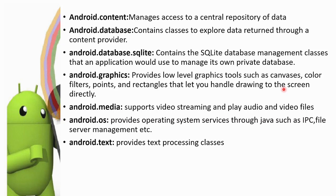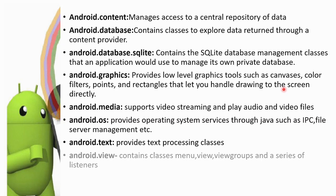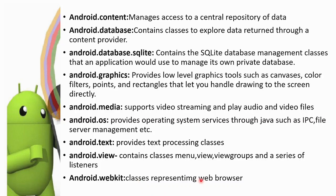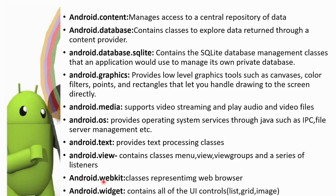android.text provides text processing classes. android.view contains classes like menu, view, view group, and a series of listeners. For any view, button, or label, we can add this package. android.webkit provides classes representing a web browser. android.widget is used for all UI controls such as list, grid, and image views.